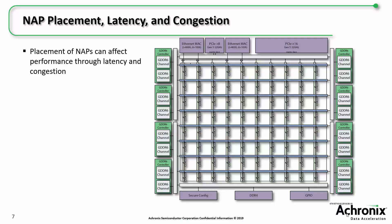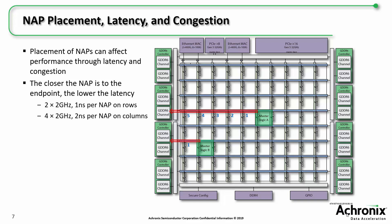The placement of NAPs can impact latency and congestion in a design, so it's important for designers to understand how placement can affect performance. The closer a NAP is to the target endpoint, the lower the latency. For example, master logic A, located at column 6, row 5, has to traverse 5 NAPs along the row before reaching the peripheral ring of the NOC and ultimately to the GDDR6 channel shown, whereas master logic B, located at column 2, row 3, only traverses one NAP before reaching its GDDR6 destination.